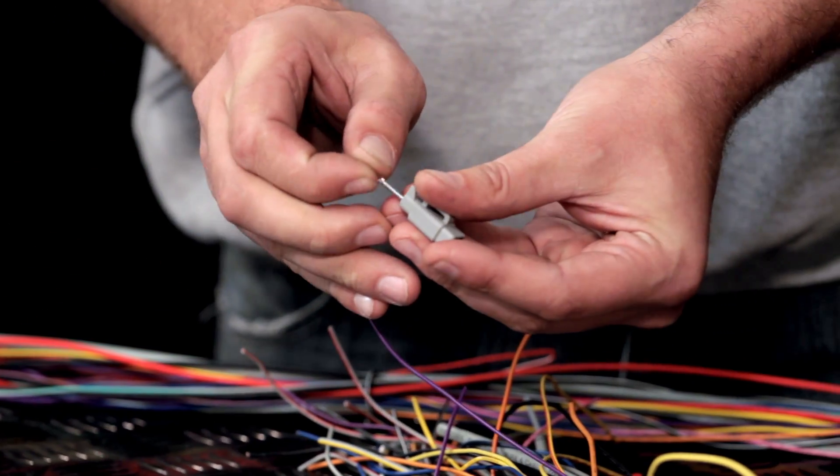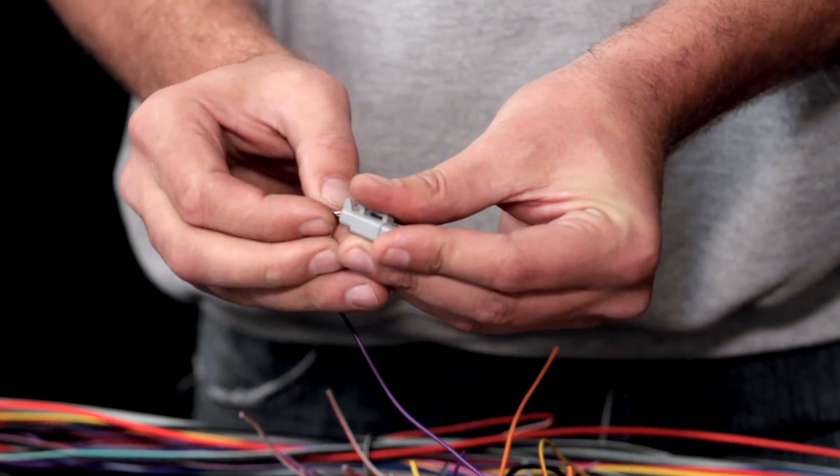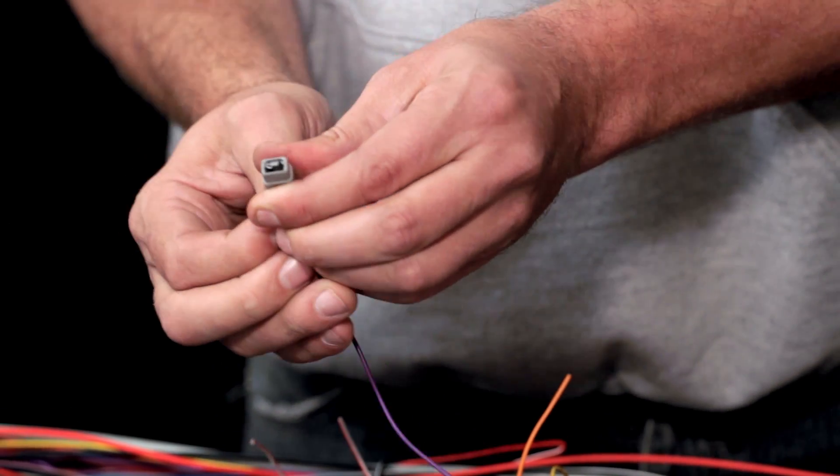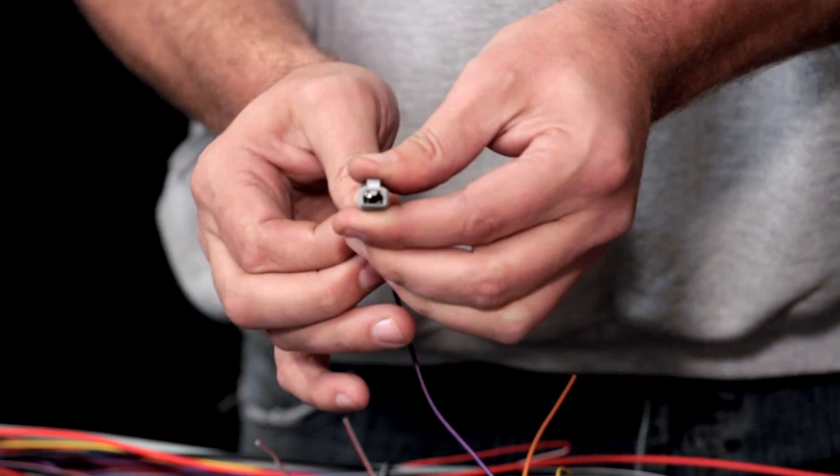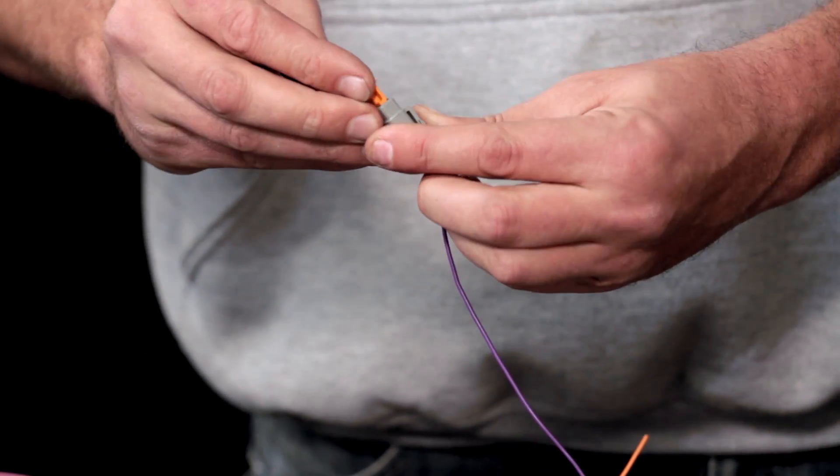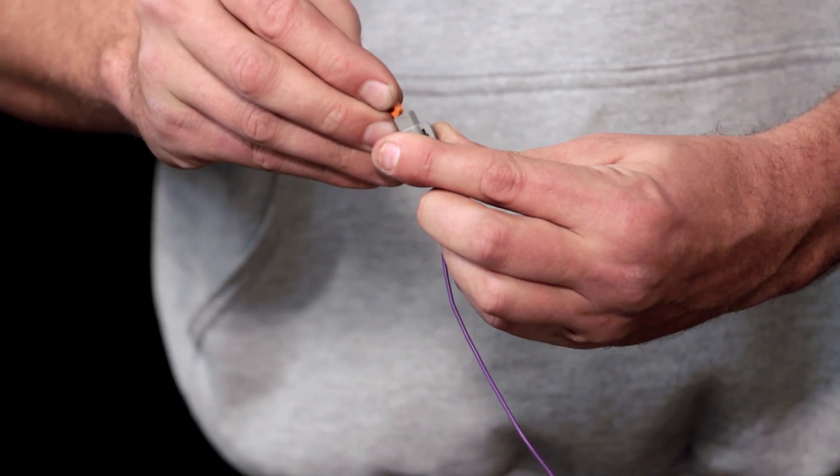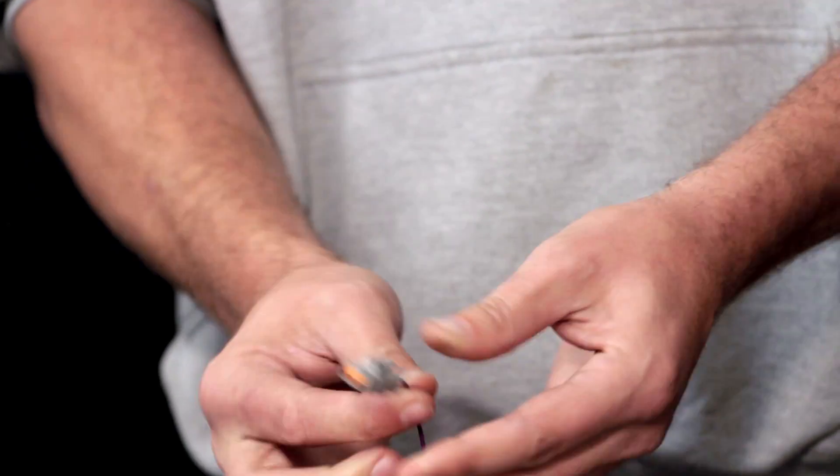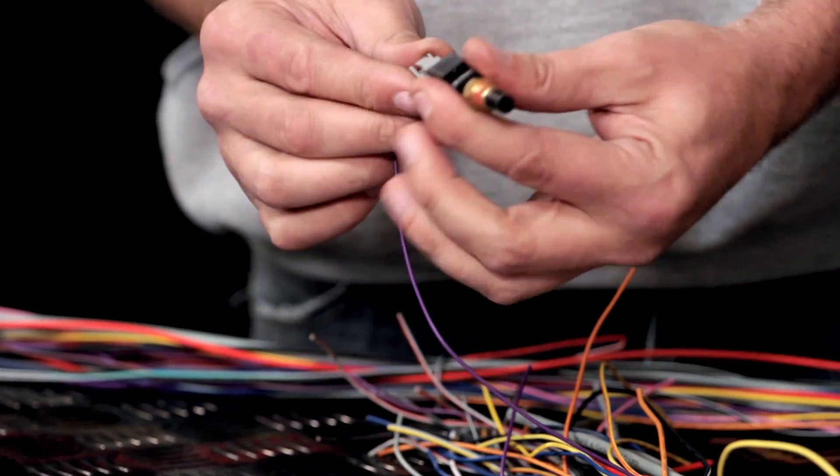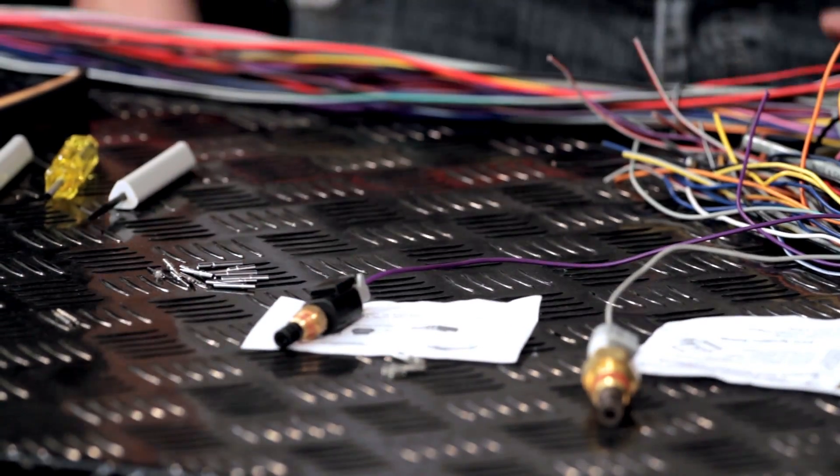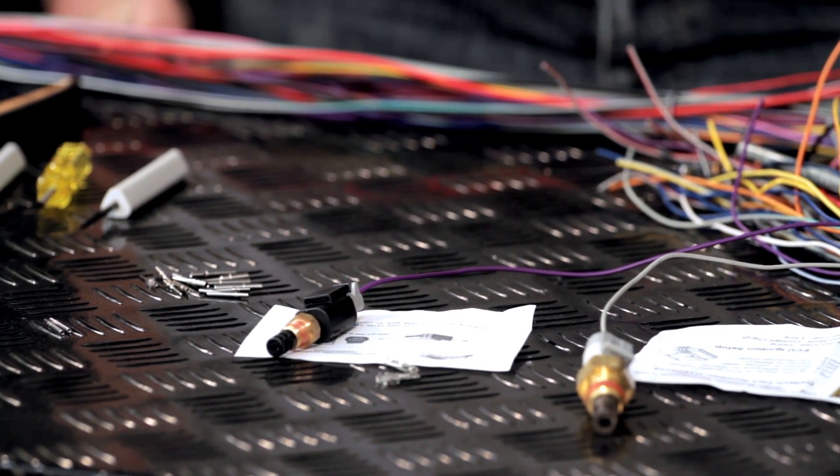We slide it straight into the Deutsch DTM series connector right up until it clicks into place. So that's in nice and tight. If we put the locator in and press it in so that it clicks in tight and that's it. Should plug straight into our air or coolant temperature sensor. And that's the way that we crimp one of the Deutsch.